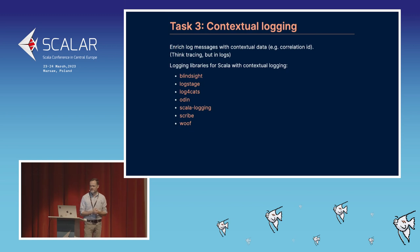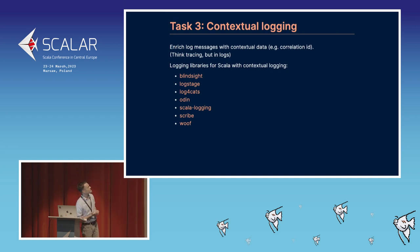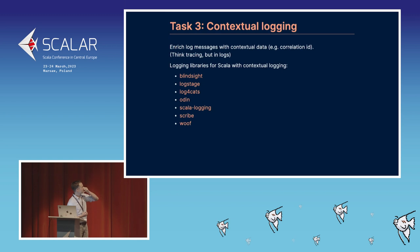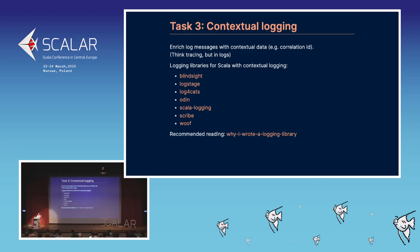It came to me as a surprise that the topic of logging is quite comprehensive and complex. There are many alive Scala logging libraries which support contextual logging — it looks like everybody sooner or later writes either a JSON library or a Scala logging library. Some of them are effectful, like log4cats, odin, or woof. There is a recommended reading by the author of Blindsight — a very nice article — arguing that logging is actually better than tracing, because developers like to sift through logs.